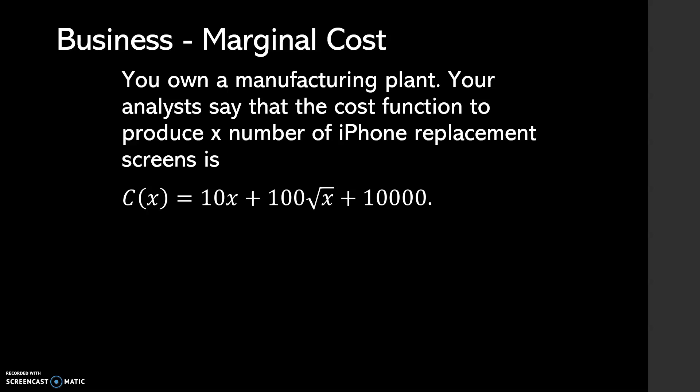You people are always dropping your phones, so let's use that. You have a manufacturing plant, and you're not great at math, so you've hired some analysts. They figure it out based on how big your factory is, how many people it takes to run the machinery, how much the machinery costs, electricity, all sorts of things — and they figured out this equation. The input is X, which is the number of iPhone replacement screens created at your factory. The output is C, that's cost — how much it would cost to make all of those screens.